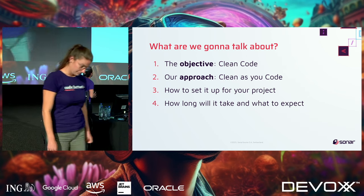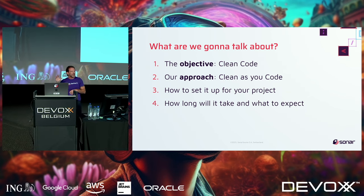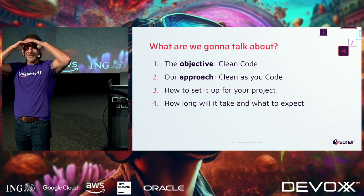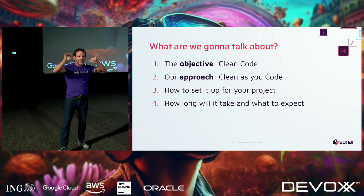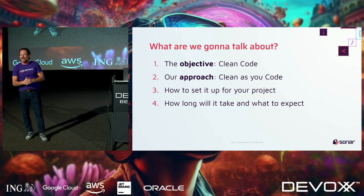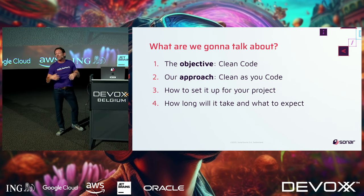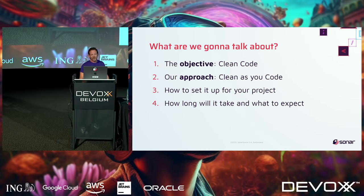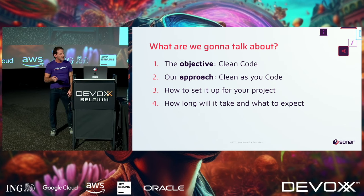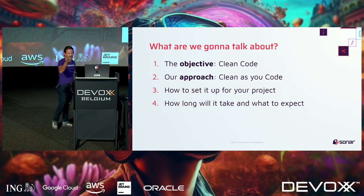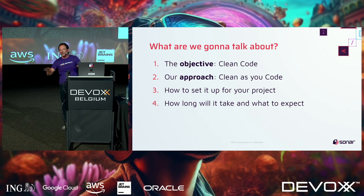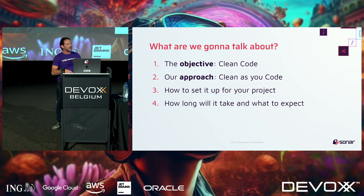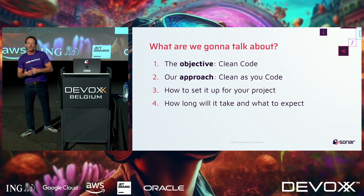So what are we going to talk about today? The objective is clean code. We'll talk about our approach to clean code and how you achieve it — we call that clean as you code. Then we'll have a demo from my colleague showing how to set things up, how to clean your code, and become the best developers in the world. At the end, I'll wrap up and talk about how long it actually takes, how much it costs, and what to expect.